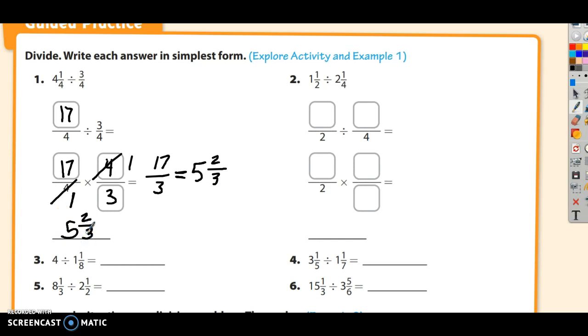Alright, let's check out the second one. Notice they gave us a bubble for both numerators, because both of these are mixed numbers, and I have to convert them to improper fractions. 1 times 2 is 2, plus 1 is 3. So the first one is 3 halves. The second one is 2 times 4 is 8, plus 1 is 9. The second one is 9 fourths.